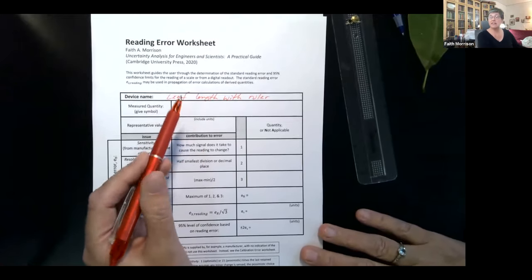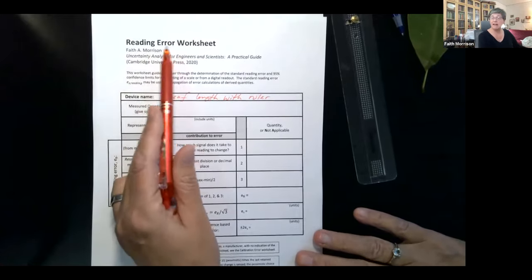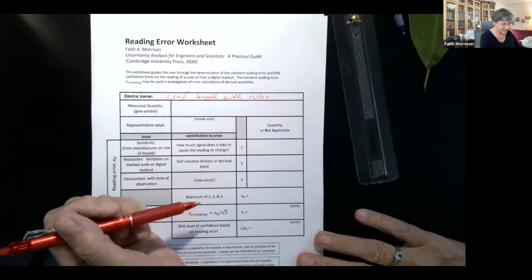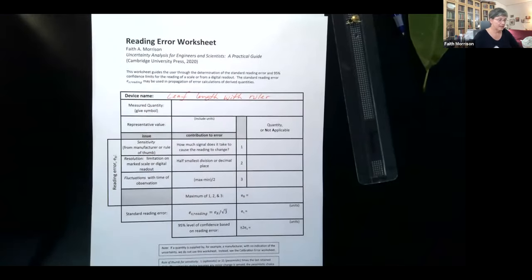So there is a limitation to the accuracy with which I can actually take a measure of leaf length. And in the case of leaf length, there's what's called reading error. So this is the reading error worksheet.